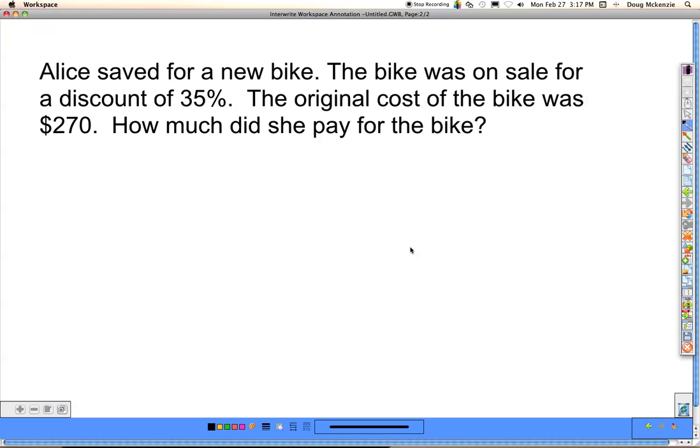Alice saved for a new bike. The bike was on sale for a discount of 35%. The original cost of the bike was $270. How much did she pay for the bike? Well, discount is an amount that you take off of the original amount. Without the discount, the bike costs $270, and that is 100% of the cost of the bike. But Alice is only going to pay this much with 35% removed.